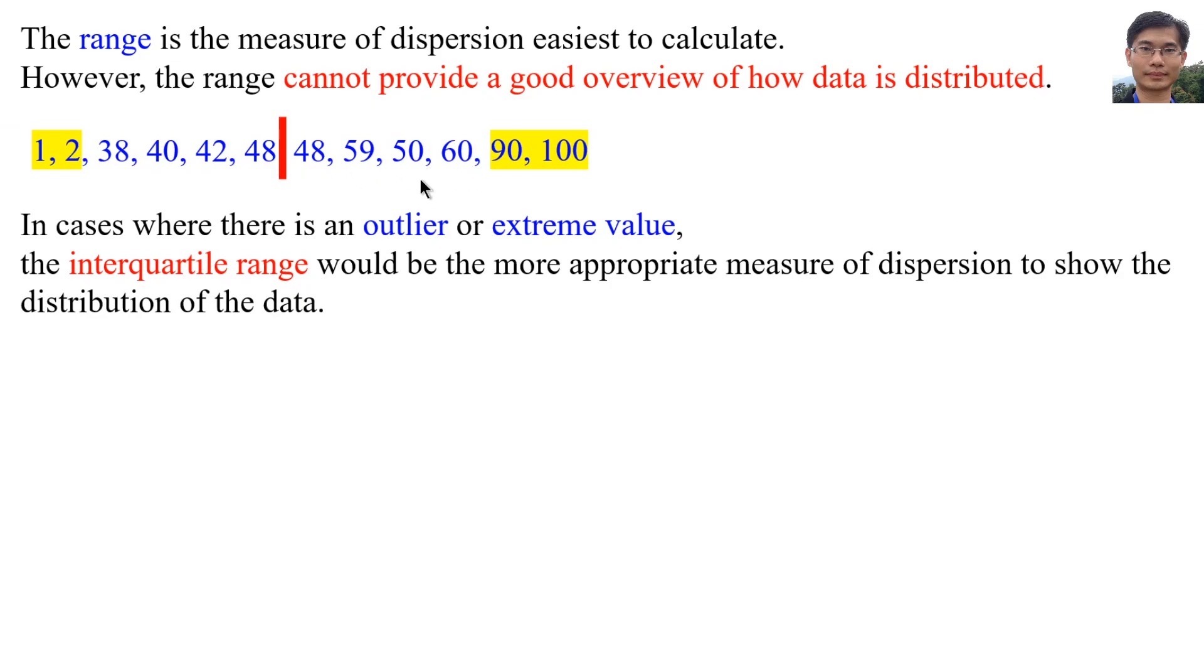For the third quartile, the median is here. So, third quartile is the average of 50 and 60, equal to 55. And for the first quartile, the median is here. So, the average of 38 and 40 is 39. So, interquartile range equals 55 minus 39 equals 16. If we tell other people that the interquartile range of the data is only 16, then they know that the spread of data is small.